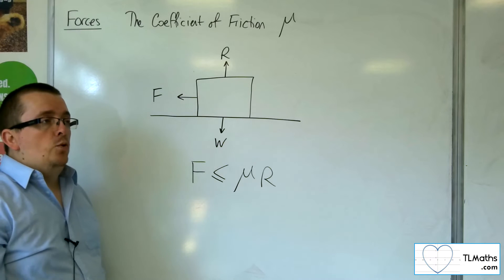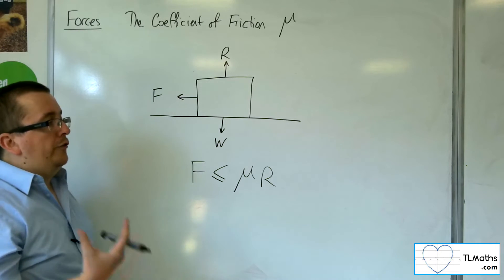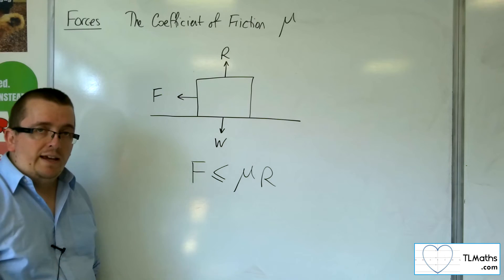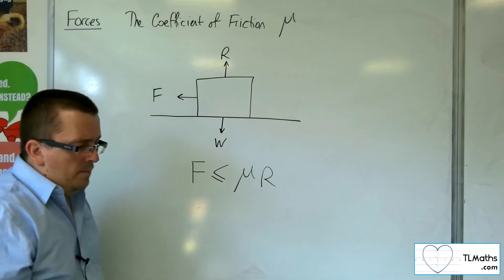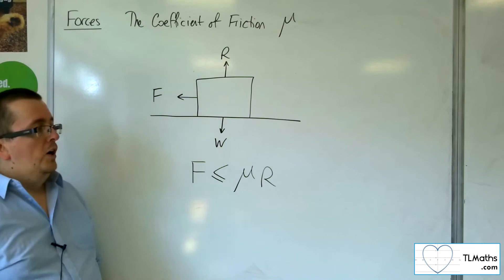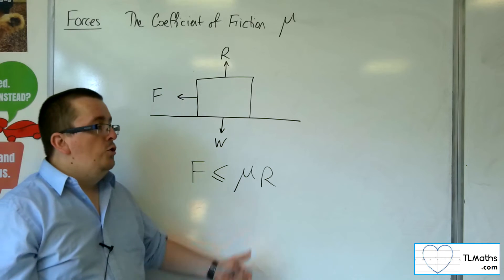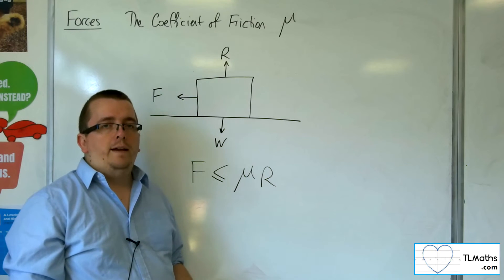μ is designated by how smooth the table actually is. If you're trying to push a box on carpet, for example, rather than a fairly smooth tabletop, μ will be larger.